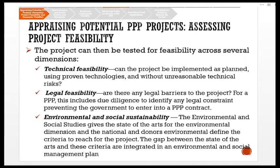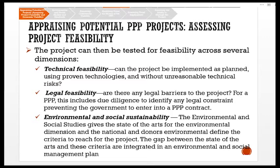Assessing project feasibility: the project can be tested for feasibility across several dimensions. Technical feasibility asks: can the project be implemented as planned using proven technologies and without unreasonable technical risk? Legal feasibility asks: are there any legal barriers to the project? For a PPP, this includes due diligence to identify any legal constraints preventing the government from entering into a PPP contract. Environmental and social sustainability studies give the state of the art for the environmental dimension; national and donor criteria define what must be achieved, and the gap is integrated into an environmental and social management plan.